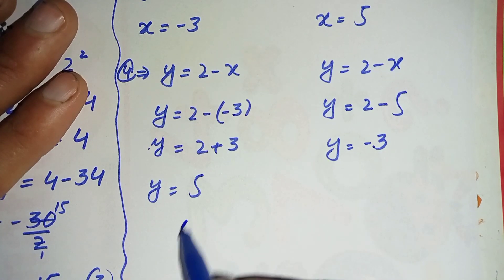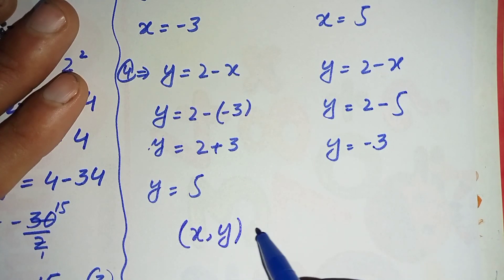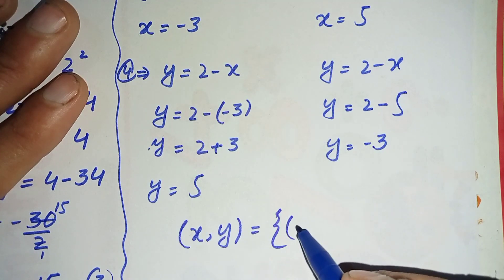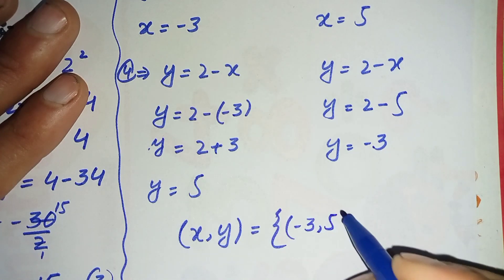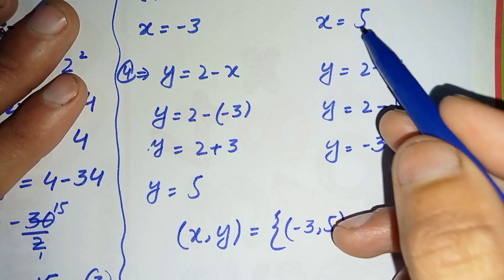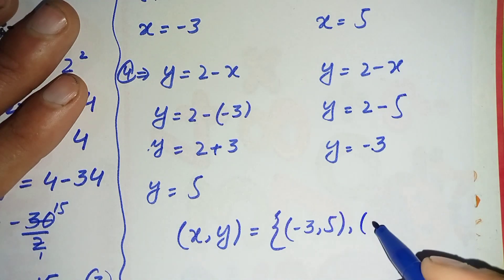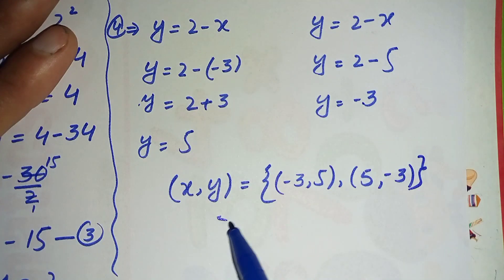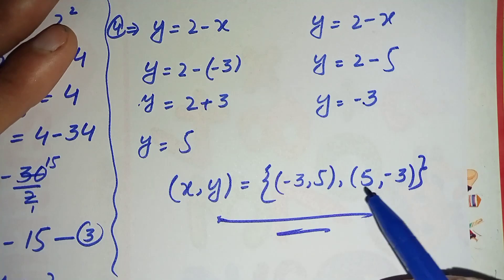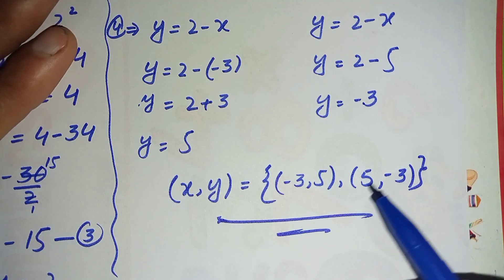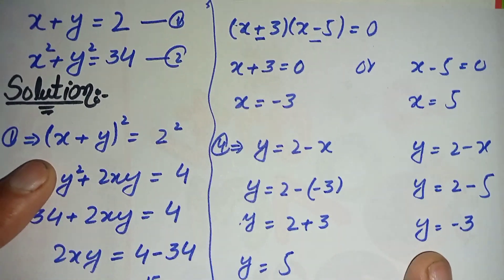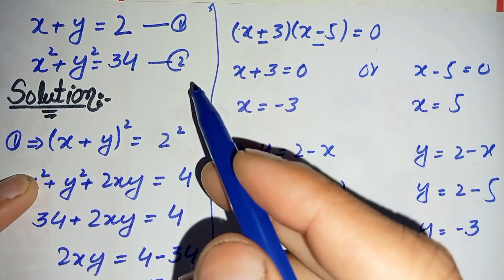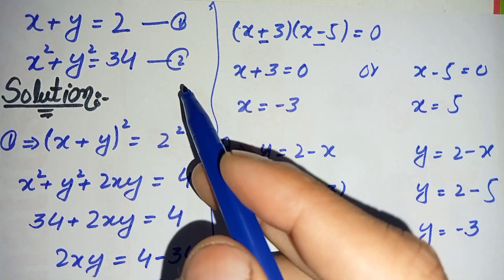So we have two solutions: the first is x is equal to minus 3 and y is equal to 5, and the second solution is x is equal to plus 5 and y is equal to minus 3. These are the two possible solutions of this nice algebra math problem. If you like this video, don't forget to subscribe to my YouTube channel. Thanks for watching.